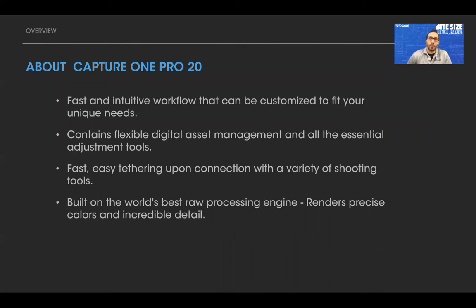Quick recap — what is Capture One Pro? It's a fast and intuitive workflow that can be customized to fit your unique needs. It contains flexible digital asset management and all the essential adjustment tools to convert your raw file to a TIFF, JPEG, PSD, or whatever it needs to be. It offers fast and easy tethering with a variety of shooting tools, and it is a whole lot more stable than other tethered shooting options — quicker, more stable, more robust. According to Phase One, it's built on the world's best raw processing engine, rendering precise colors and incredible detail. I've been using Capture One for 17 years and it's my go-to for converting a raw file to a TIFF or JPEG.